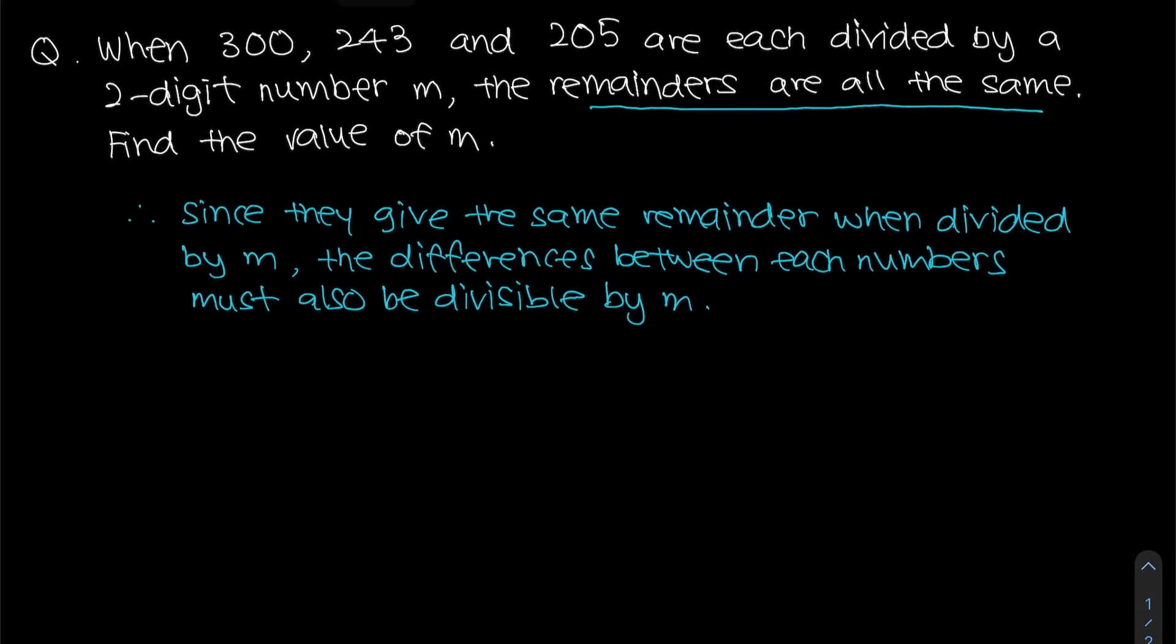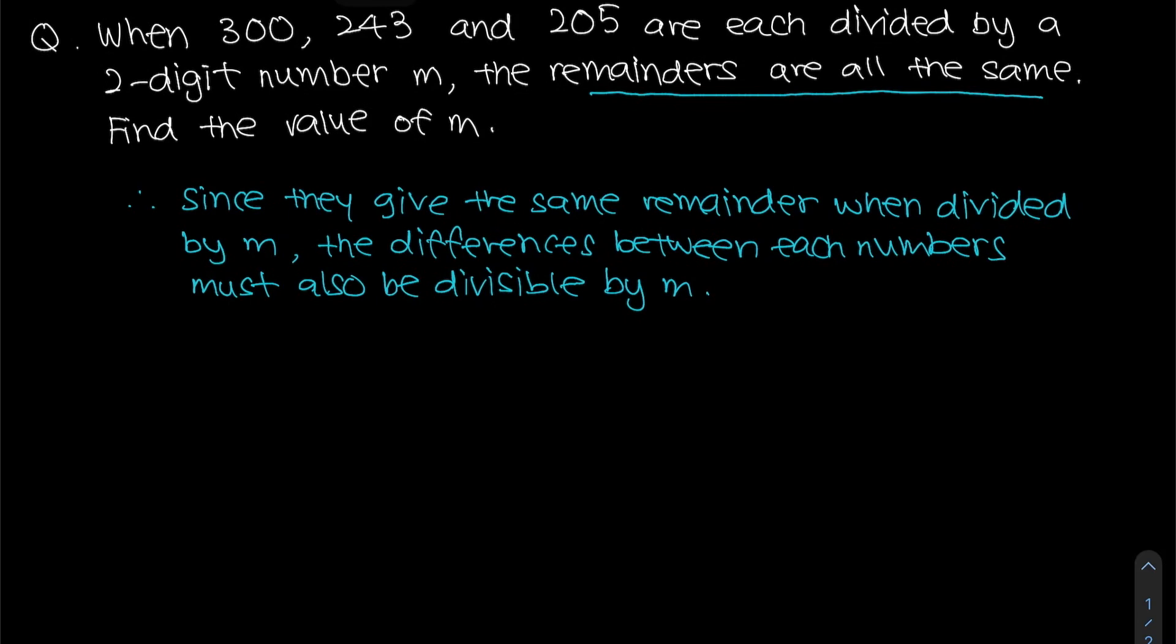So if we have three numbers over here, we can find three differences using 300 with 243. This will give us 57. We can also take 300 minus 205, which will give us 95. We can also take 243 minus 205, which is equals to 38.